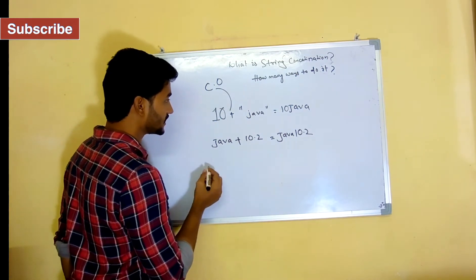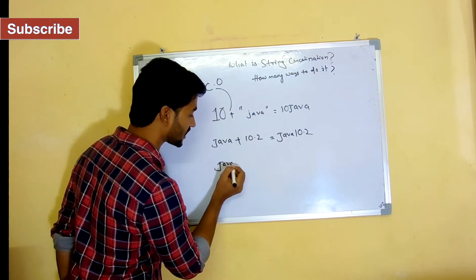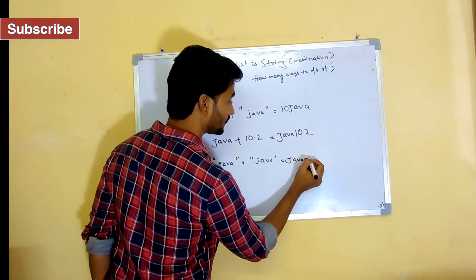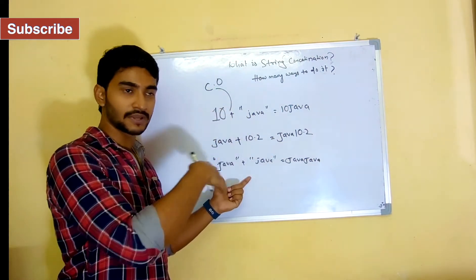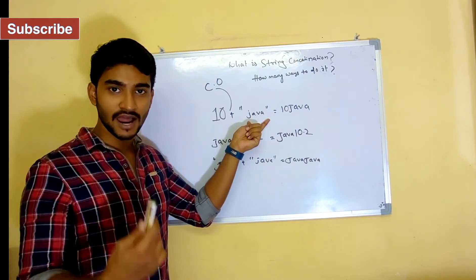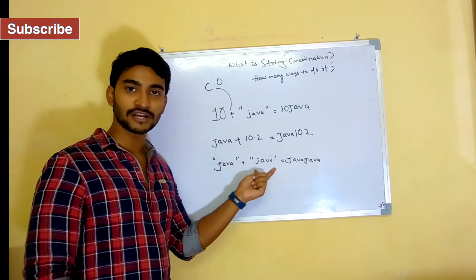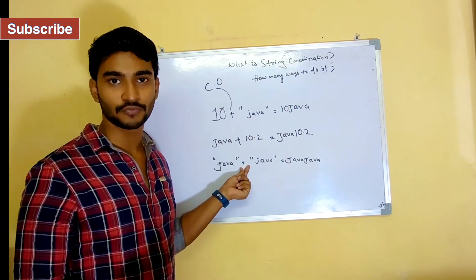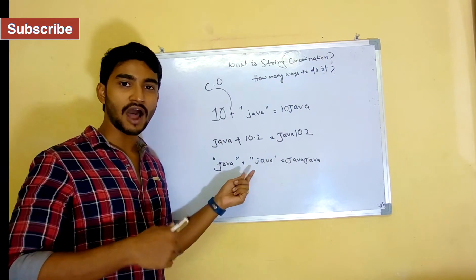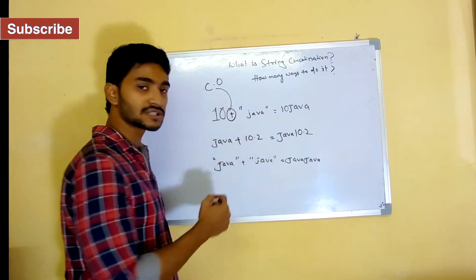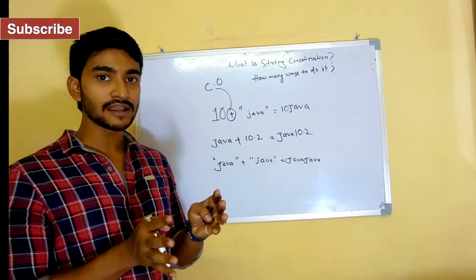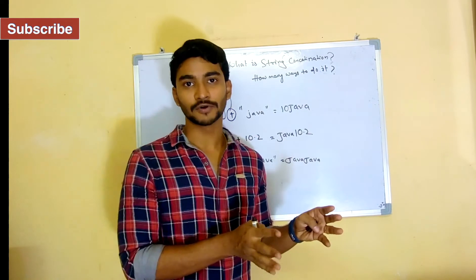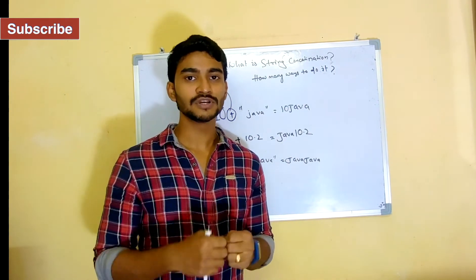If any of the operands we are trying to add is a string, or both operands are strings, then this plus operator is going to work as a concatenation operator. This is all about how you can do concatenation using the plus operator. In the case of strings we call it a concatenation operator because it is concatenating two different strings and giving us a result which may be a number or a string.